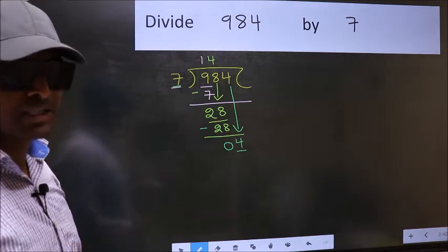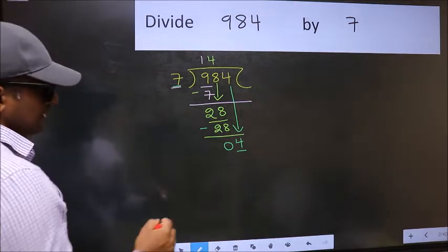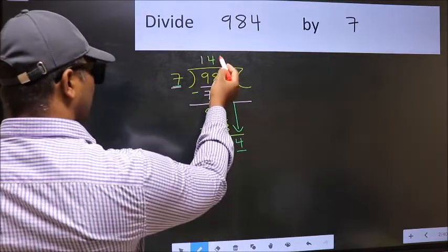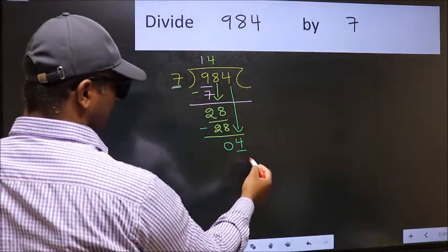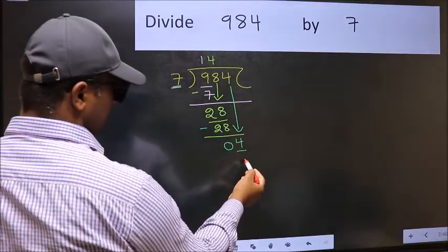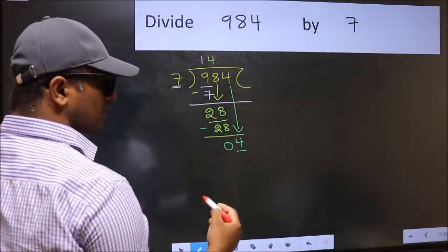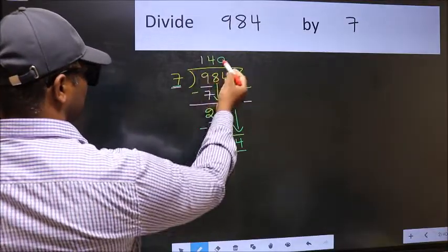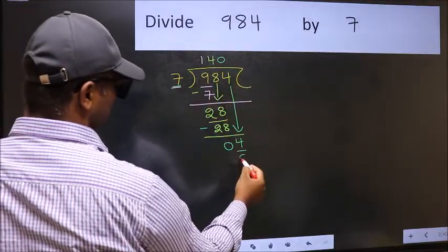Instead, what you should think of doing is, which number should we write here? If I take 1, we will get 7. But 7 is larger than 4. So what we should do is, we should take 0. So 7 into 0, 0.